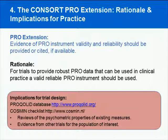The rationale is that trials can provide robust PRO data to inform clinical practice only when a valid, reliable PRO has been used. Given that there are so many measures available, interested trialists might find the PRO-QALID database particularly useful — it has information on the validity and reliability of a wide range of instruments, providing references and further details on psychometric properties. For those interested in psychometric properties more generally, the COSMIN checklist provides a useful resource to evaluate existing tools and identify evidence from other trials for the population of interest.